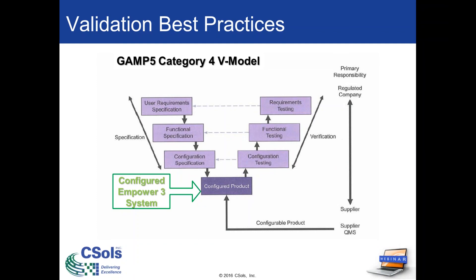The GAMP 5 V model illustrates what validation documents are needed and at what stage they are needed in. Although the V model does not illustrate all of the required validation deliverables, the GAMP 5 guide as a whole does.